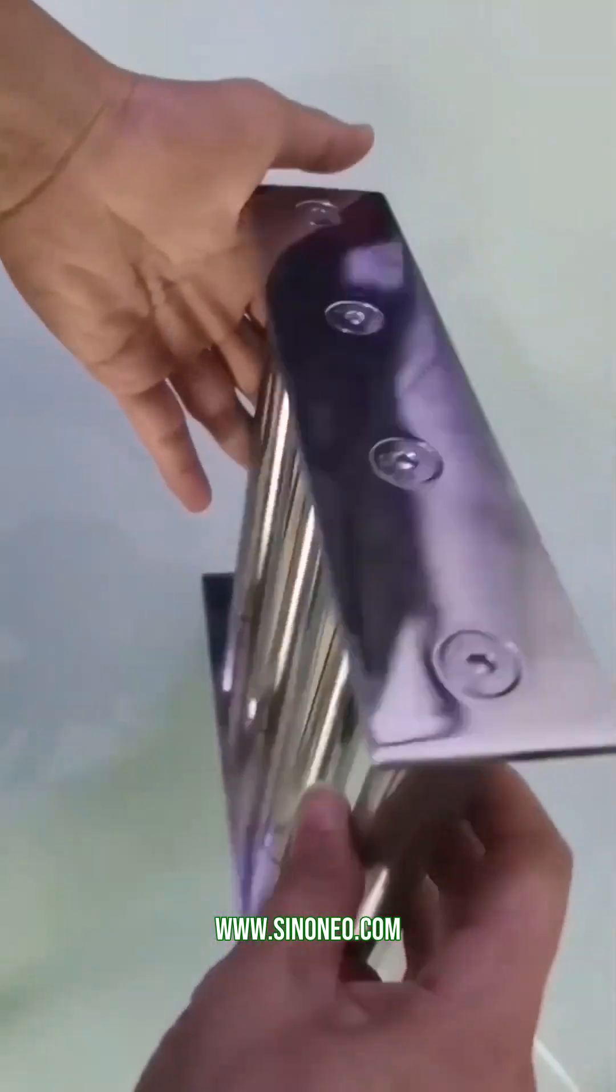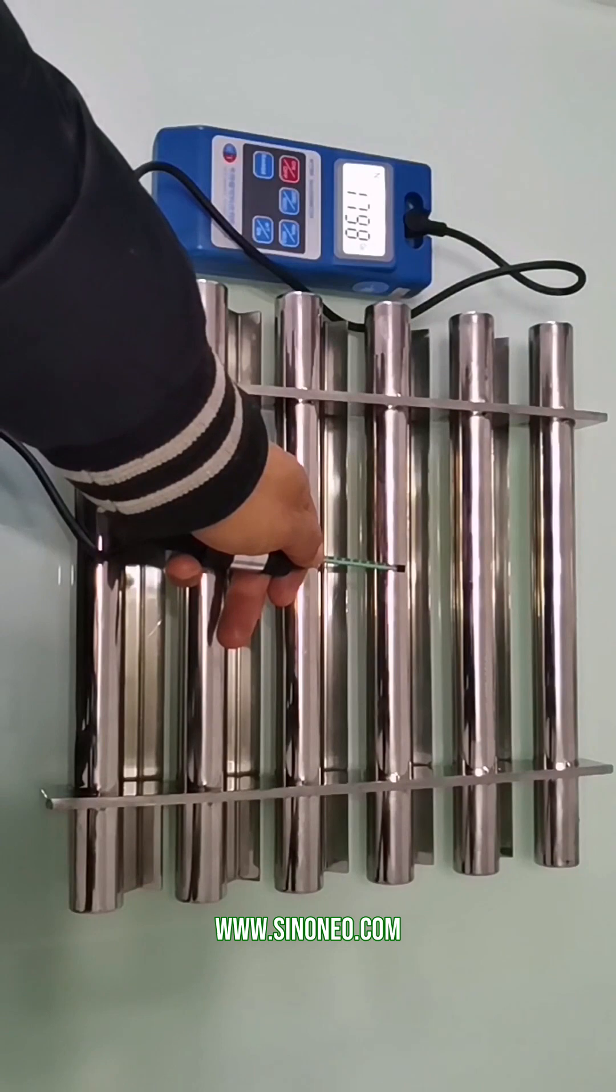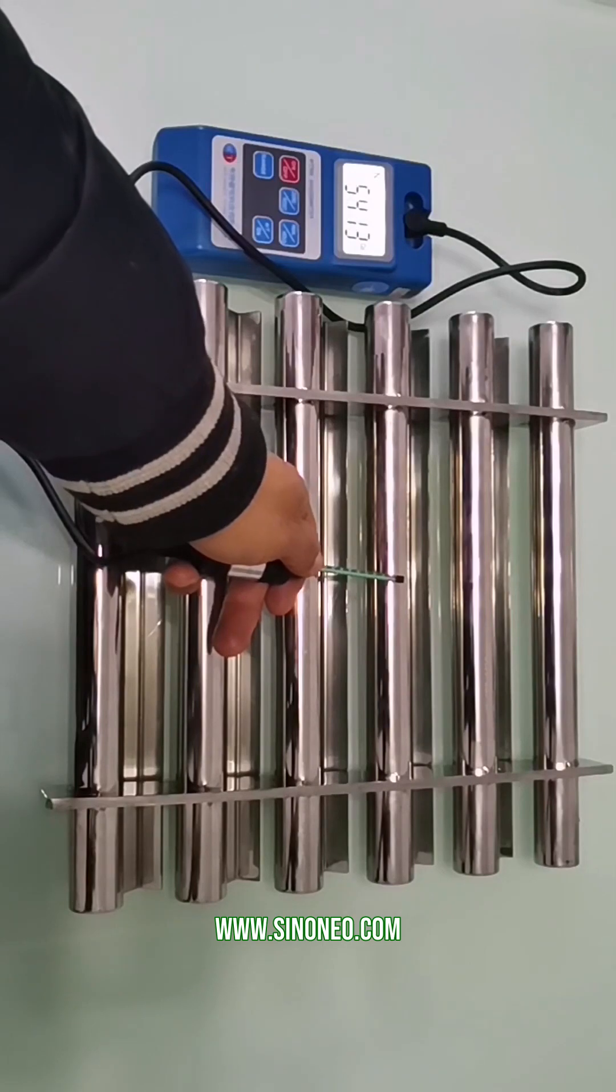Next, use a non-metallic scraper or brush to gently remove any ferrous material from the surface. Remember, never use metal tools as they could damage the magnets.